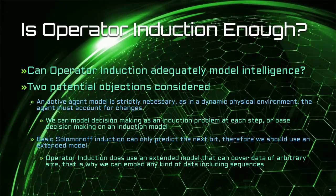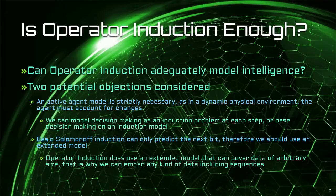There are two potential objections considered. An active agent model is strictly necessary, as in a dynamic physical environment the agent must account for changes. We can model decision-making as an induction problem at each step or base decision-making on an induction model. Therefore, we can solve the agent problem with a simple policy — a simple control program that uses a sophisticated prediction process. The smart trick here is the prediction power, and the control program is simpler. It can even be a fixed dumb program. Basic Solomonov induction can only predict an X-bit, therefore we should use an extended model like an IEC. Operator induction does use Hutter's extended sequence induction model that can cover data of arbitrary size internally. That is why we can embed any kind of data, including sequences. Therefore, we can deal with complex data structures, and this gives us a lot of leeway in designing our perception capabilities. It gives us a rich foundation of predictions to work on.